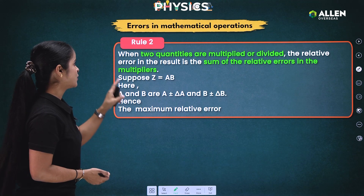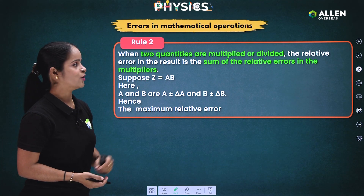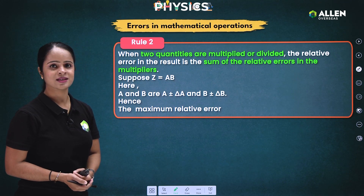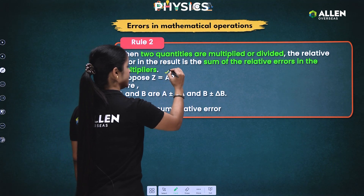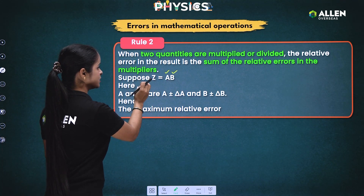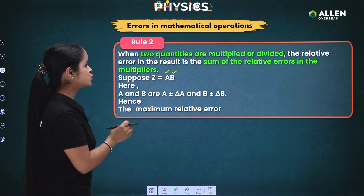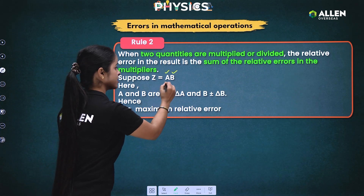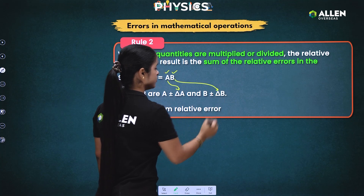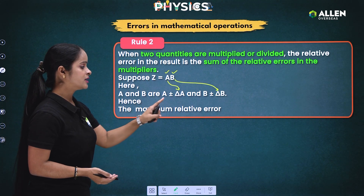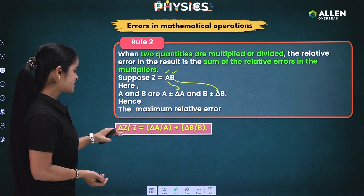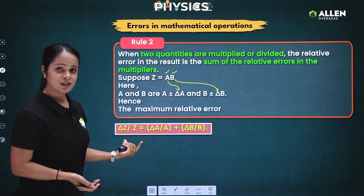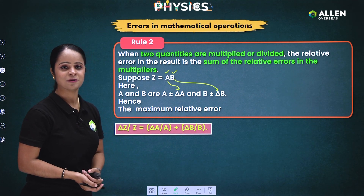Rule number 2: when two quantities are multiplied or divided, the relative error in the result is the sum of the relative errors in the individual quantities. Here A and B are multiplied and Z is the final product. The maximum relative error in Z is given by delta Z upon Z equals delta A upon A plus delta B upon B. That means the relative error in Z equals the relative error in A plus the relative error in B.